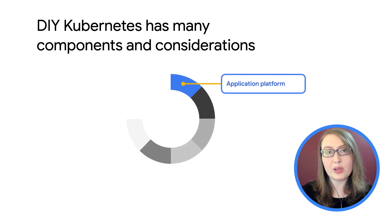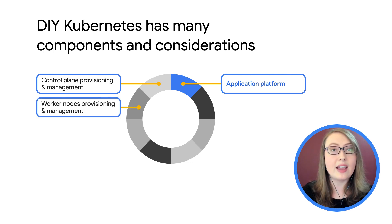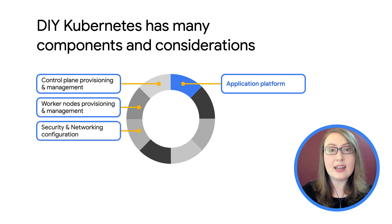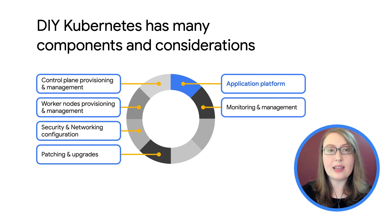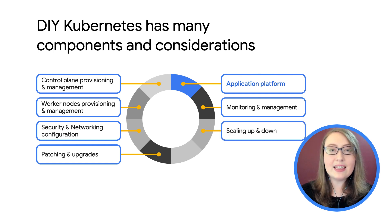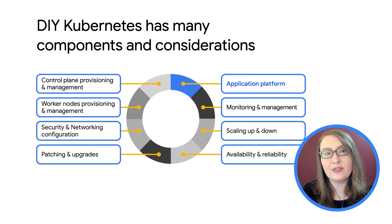These include the control plane, which itself is made up of several components, as well as provisioning and management of the underlying compute nodes, security and networking configuration of the nodes as well as the cluster as a whole, patching and upgrades of both the cluster software and the compute nodes, monitoring or observability components, as well as management tools such as policy configuration capabilities, scaling tools such as pod level and cluster or node level autoscalers, and availability and reliability capabilities and tools. Some of these components are built into Kubernetes itself, and some are essential capabilities which may require additional tooling.